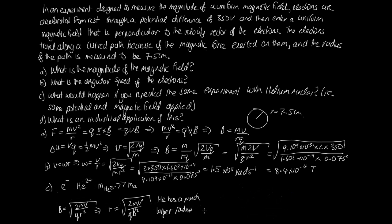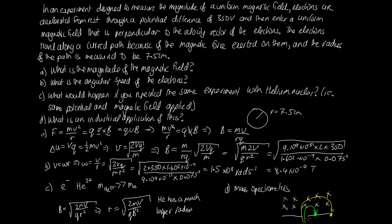For Part D, the industrial application is a mass spectrometer. Charged particles enter a magnetic field; a lighter particle changes direction quickly and lands close to where it entered, while a heavier particle takes longer to change direction and lands farther away. By measuring where particles land, we can determine their masses. This can be used to separate elements into different isotopes of the same element just by measuring where they land.